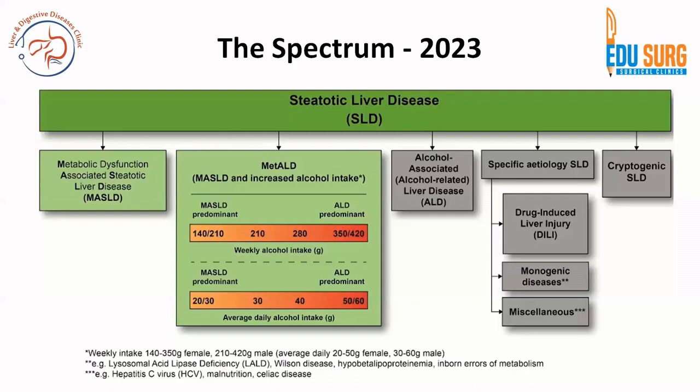On the other side, there are specific etiologies leading to steatotic liver disease, such as alcohol, drug-induced liver injury, genetic diseases including lysosomal acid lipase deficiency, Wilson's disease, and inborn errors of metabolism, as well as other causes like hepatitis C virus-related liver disease, malnutrition, and celiac disease. Lastly, there is cryptogenic steatotic liver disease.